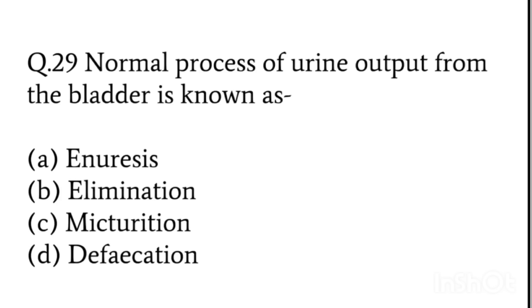Normal process of urine output from the bladder — what is the normal process of urine coming out from the bladder? Options: enuresis, elimination, micturition, defecation. The answer is micturition.